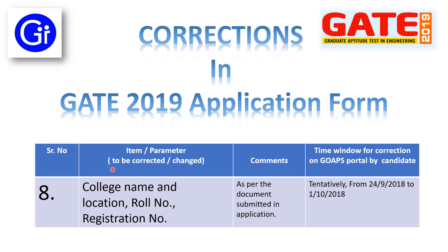The eighth parameter to be corrected or changed is college name and location, roll number, and registration number. This can be done as per the documents submitted in the application form — documents like your eligibility certificate, provisional degree, or final year degree certificate, bearing your college name, location, roll number, and registration number on them. So as per that certificate or document, you can make corrections in your college name, location, roll number, and registration number. The time window for correction on the GOPS portal by the candidate will be tentatively from 24th September to 1st October.